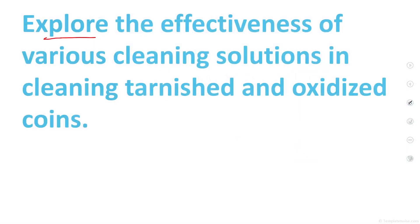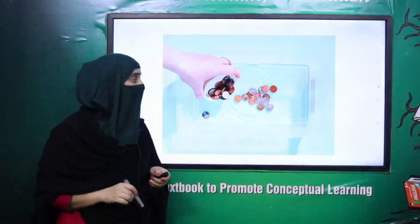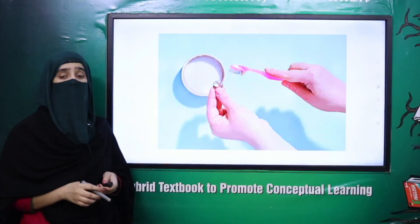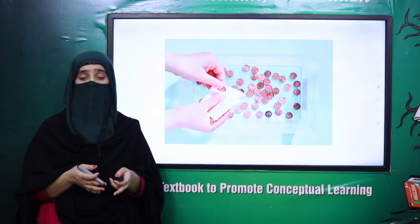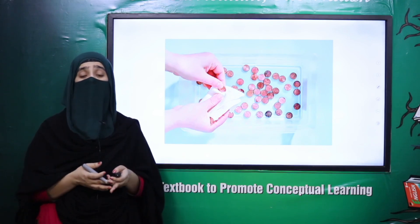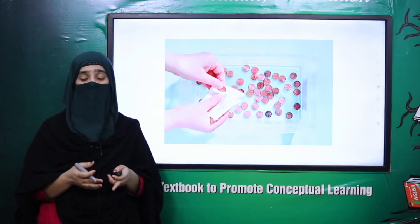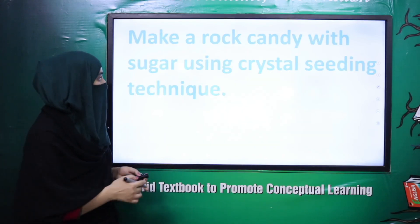Next hainne dekha: explore the effectiveness of various cleaning solutions in cleaning tarnished and oxidized coins. Hainne dekha ki kis tarah se vinegar aur baking soda ke solutions, that are cleaning solutions, yeh tarnished aur oxidized coins ko saaf karne ke liye istamal hote hain.